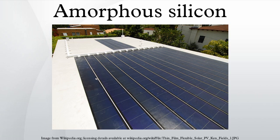Unisolar, a division of Energy Conversion Devices, produced a version of flexible backings used in roll-on roofing products. However, the world's largest manufacturer of amorphous silicon photovoltaics had to file for bankruptcy in 2012, as it could not compete with the rapidly declining prices of conventional solar panels.